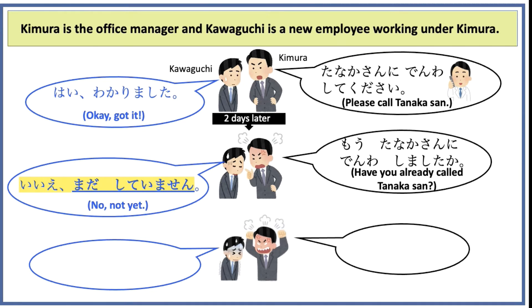Kimura, losing his temper, asks, Doushite? — Why? Kawaguchi apologizes, saying, Sumimasen — I am sorry.